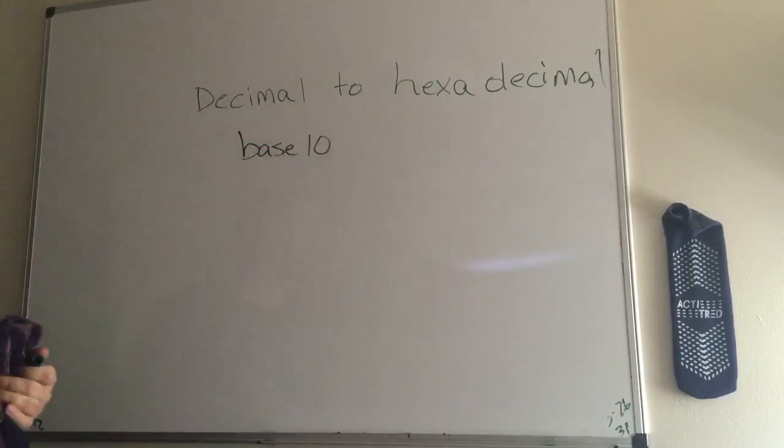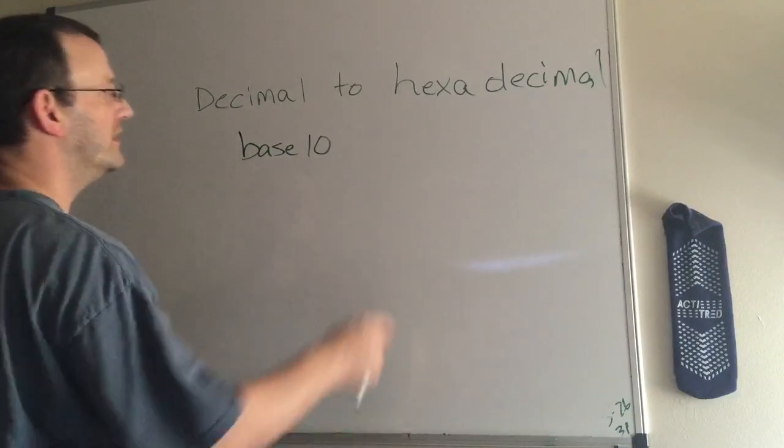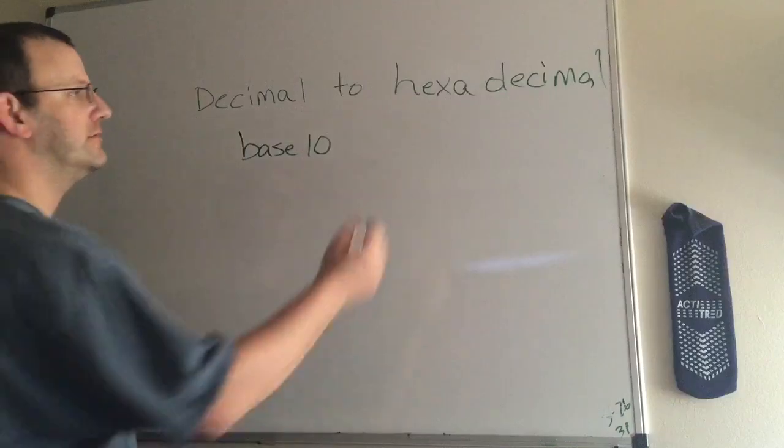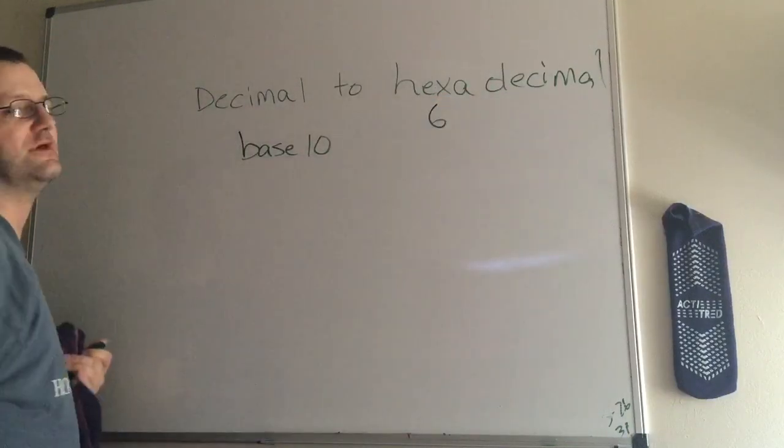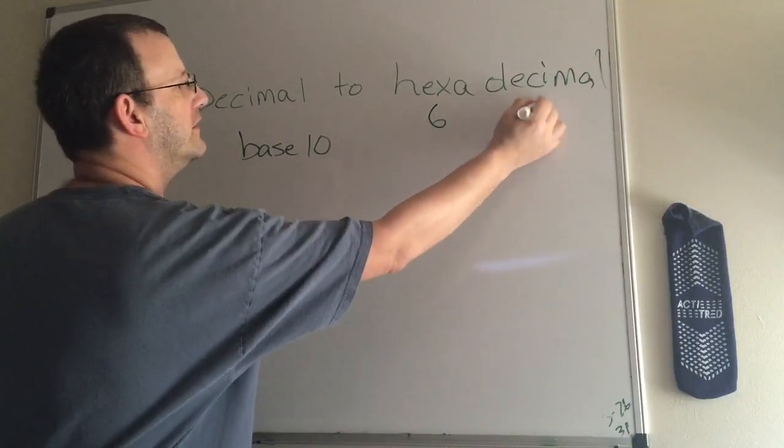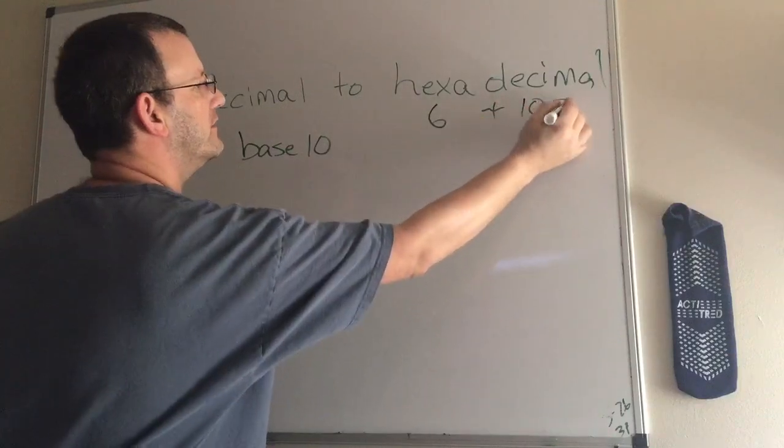But now we're doing hexadecimal. Let's consider a little bit of breaking it down, a little etymology. Hexa, like a hexagon, means six. And then you got decimal. Well, there's ten. And again, what do you got? You got 16.